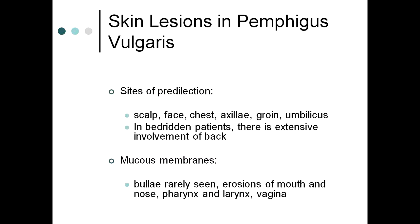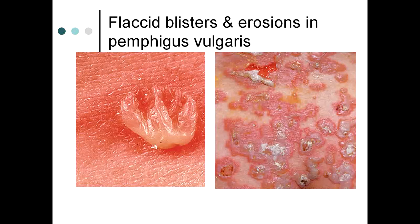Sites of predilection in pemphigus vulgaris include the scalp, face, chest, axilla, groin, and umbilicus. In bedridden patients, extensive involvement of the back may be seen. Mucous membrane bullae are rarely seen as mucous membranes are trauma-prone; erosions of the mouth, nose, pharynx, larynx, and even vaginal mucosa may be involved.